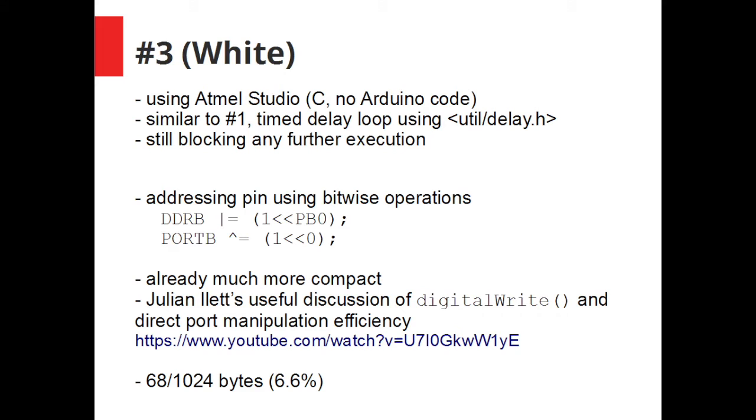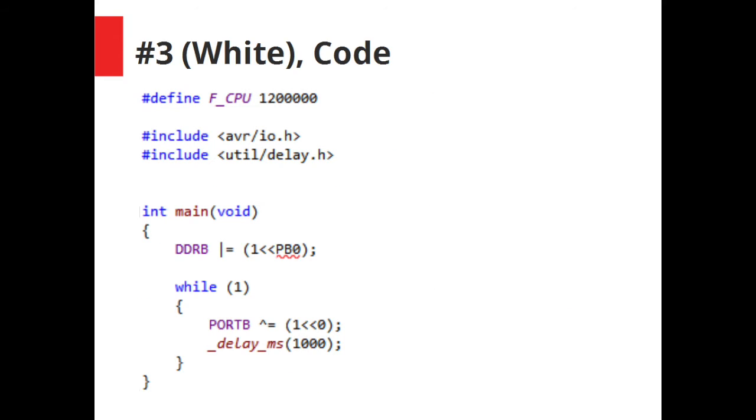Moving away from the Arduino IDE for the third sketch, this was written using the Atmel Studio IDE just using AVR GCC, just plain C with no Arduino code. It kind of works in a similar way to the first Arduino sketch in that it uses a time delay loop and it uses one of the AVR GCC delay utility libraries to do that. The problem with it again is it blocks any further execution and the blinking can't go on in the background while other things are happening.